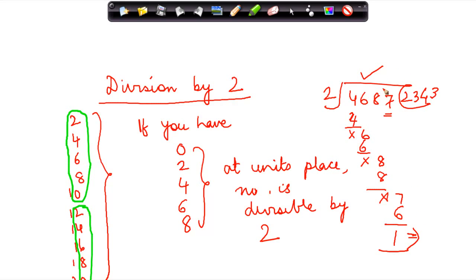which is not divisible by 2. Therefore 4687 is not divisible by 2. On the contrary, if this would have been 4868, this number would have been 8 and instead of 3 I would have got 4 here. This would have given me 8 which is 0.